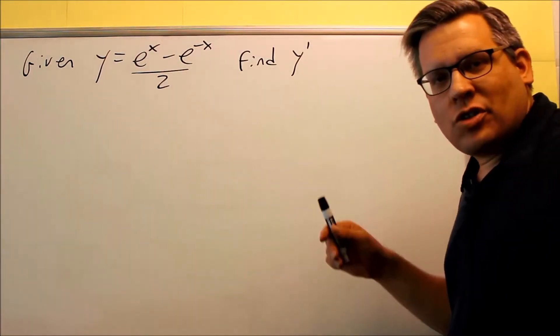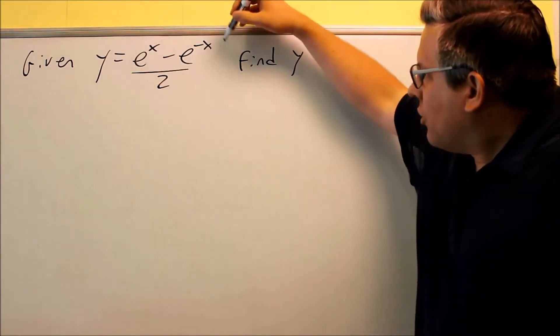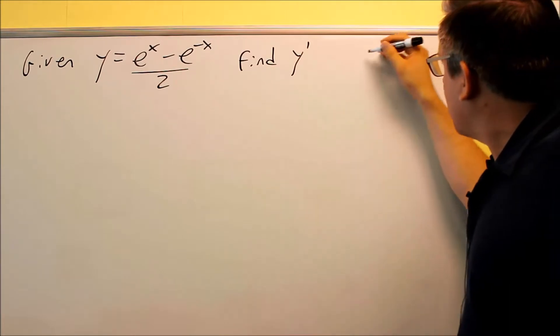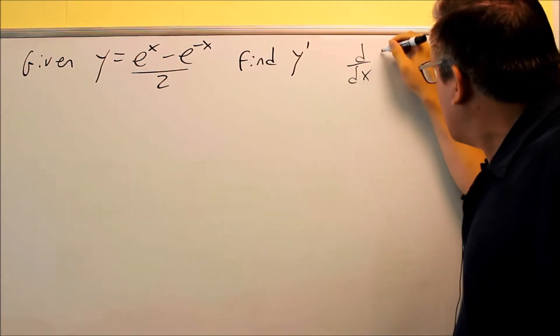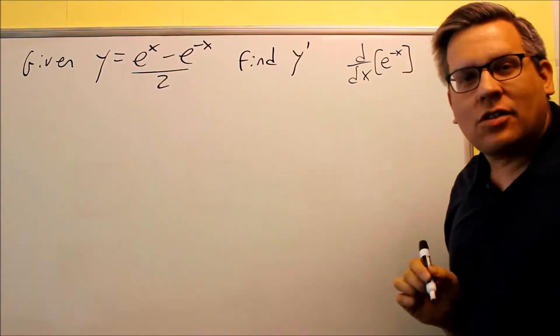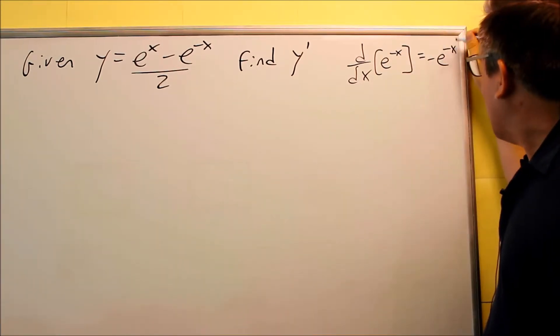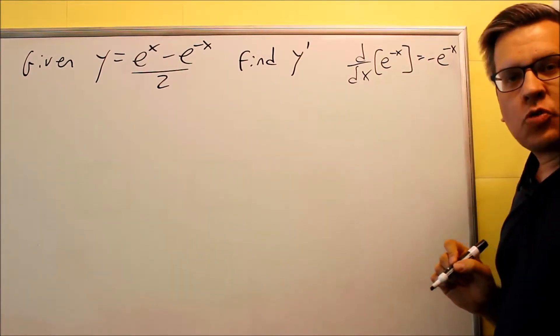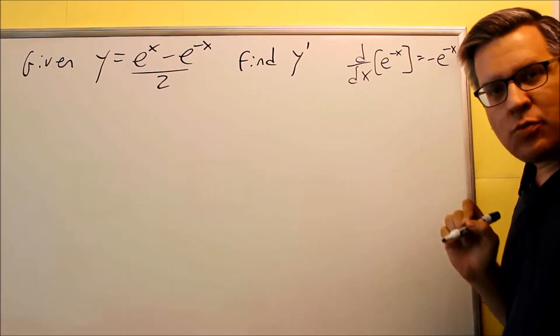We're going to use what we just did in the last example in order to answer this one. We have another e to negative x. So we just did this earlier, I'm going to go ahead and write the result of that. If I have the derivative of e to negative x, we said that was negative e to the negative x. So I'm going to leave that up there because we're going to use that again. That was the result of the last problem we did.